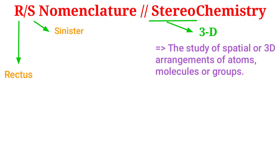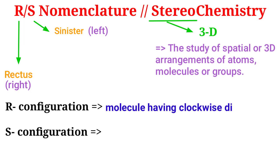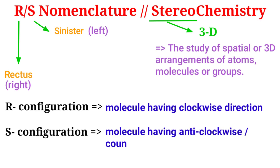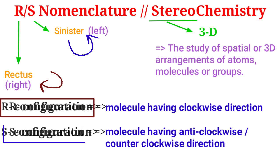R comes from 'rectus' and S comes from 'sinister' — both are Latin terms meaning right and left. If the molecule's direction is clockwise, it is called R configuration, and for anti-clockwise or counter-clockwise direction it is called S configuration.